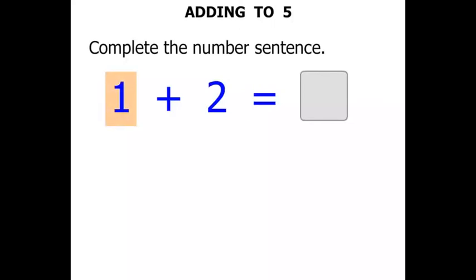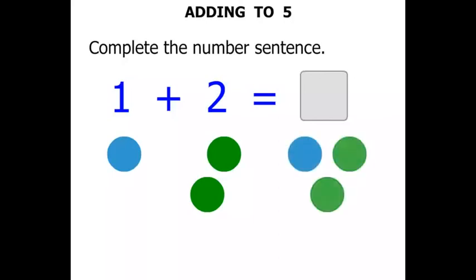For 1, we can have a blue circle. For 2, we could have 2 circles, 1, 2, 2 green circles this time. And we want to put them together. We want to add them. So let's have the blue circle and the 2 green circles. Let's see how many we have all together. 1, 2, 3.